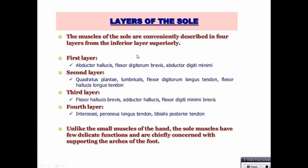The muscles of the sole are conveniently described in four layers from inferior to superior (superficial to deep). First layer: abductor hallucis, flexor digitorum brevis, abductor digiti minimi. Second layer: quadratus plantae, lumbricals, flexor digitorum longus tendon, flexor hallucis longus tendon. Third layer: flexor hallucis brevis, adductor hallucis, flexor digiti minimi brevis. Fourth layer: interossei, peroneus longus tendon, tibialis posterior tendon. Unlike the small muscles of the hand, the sole muscles have few delicate functions and are chiefly concerned with supporting the arches of the foot.